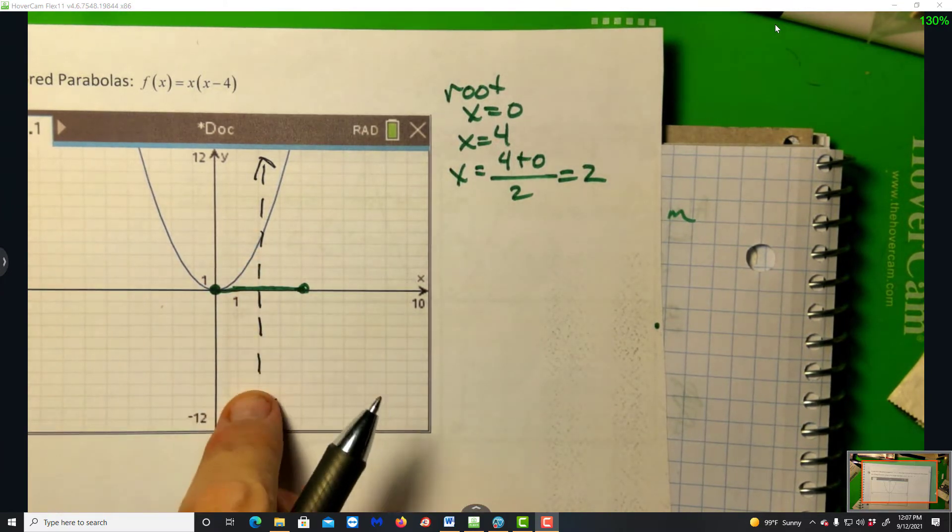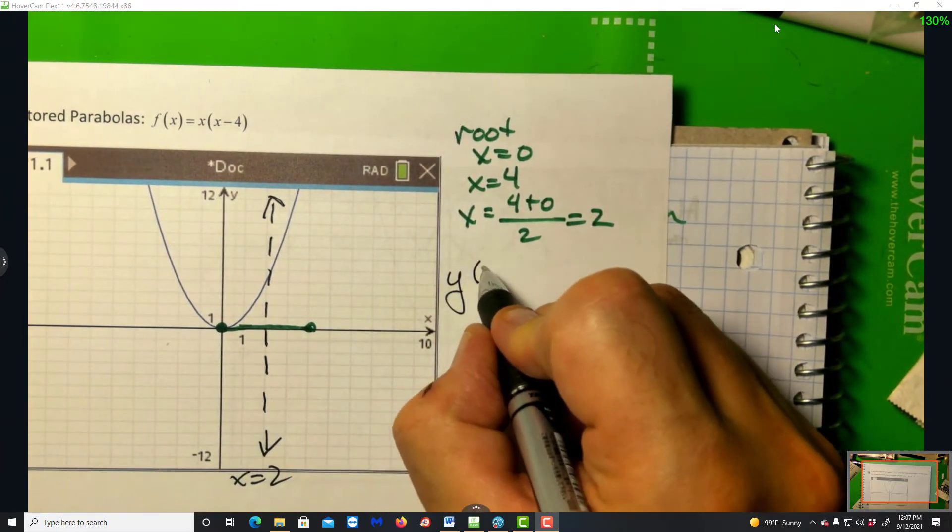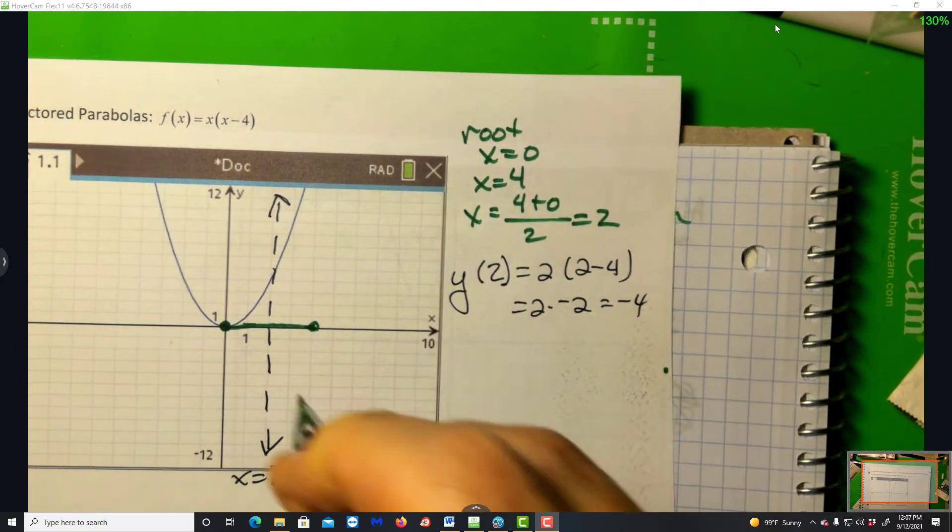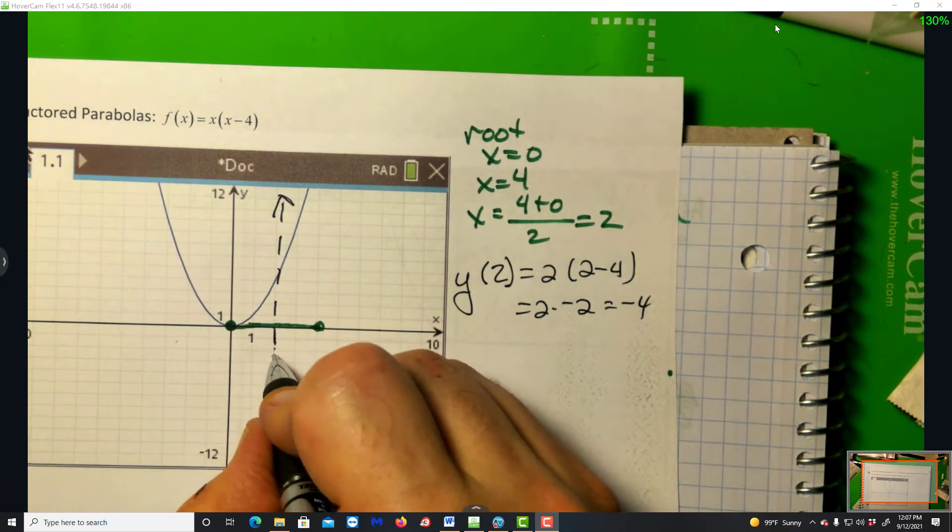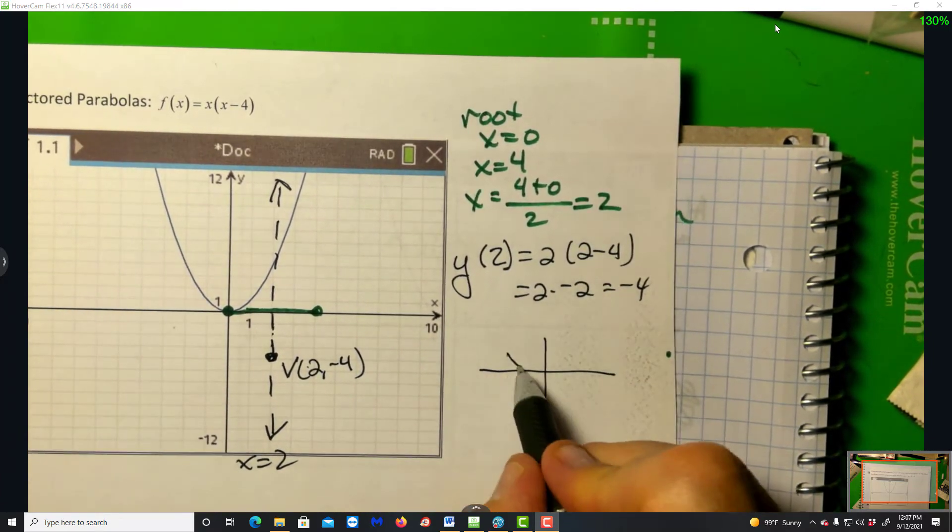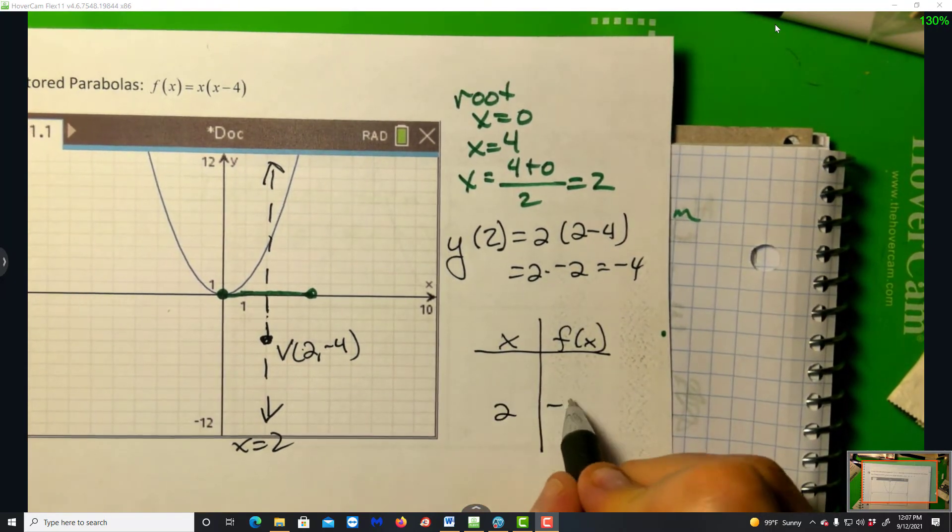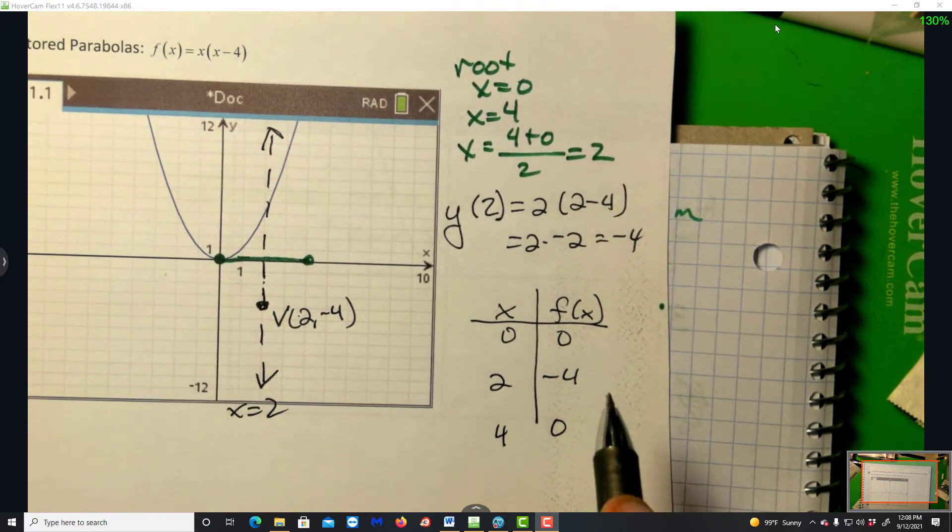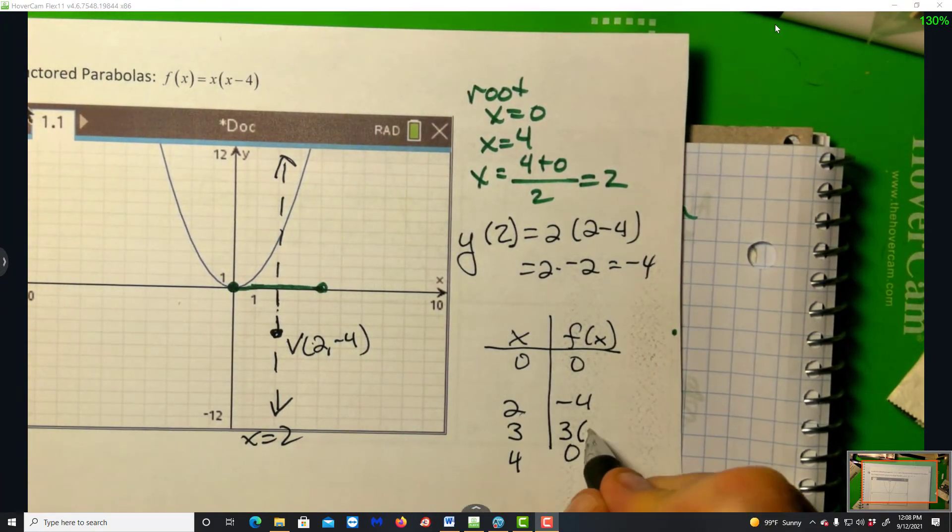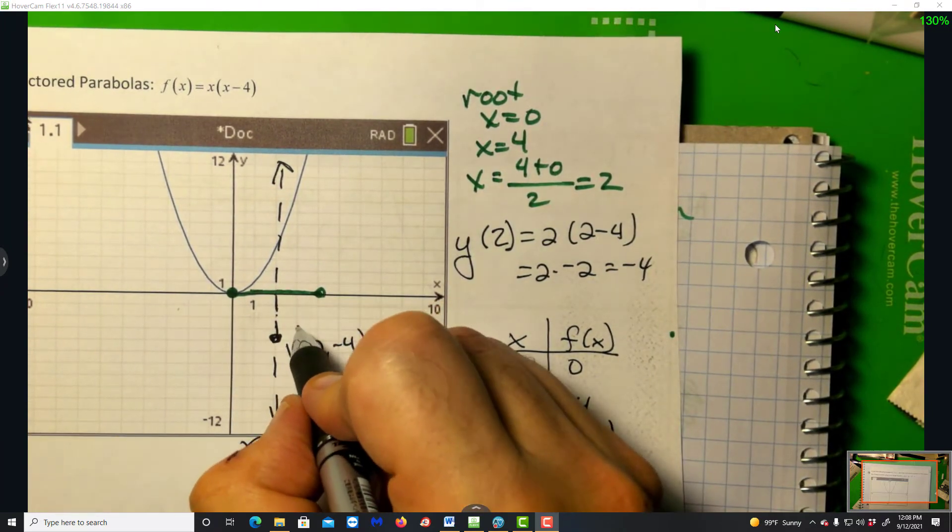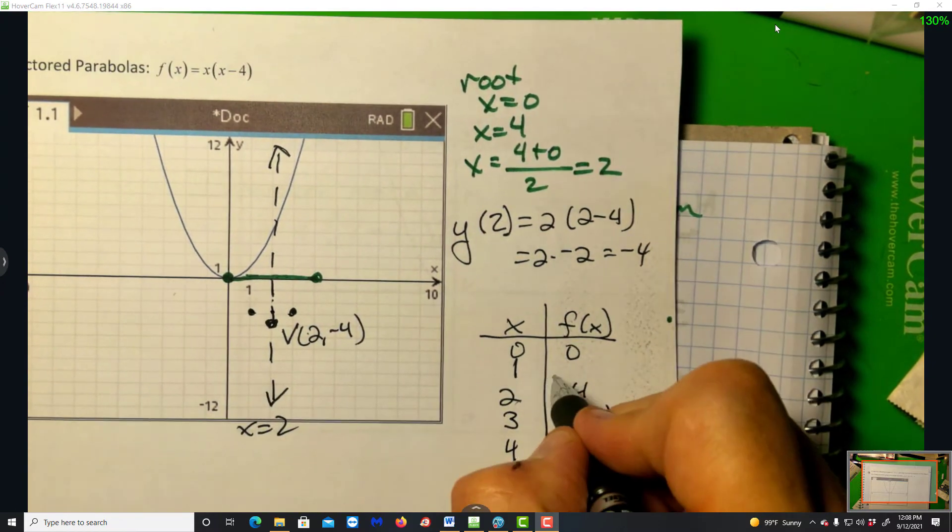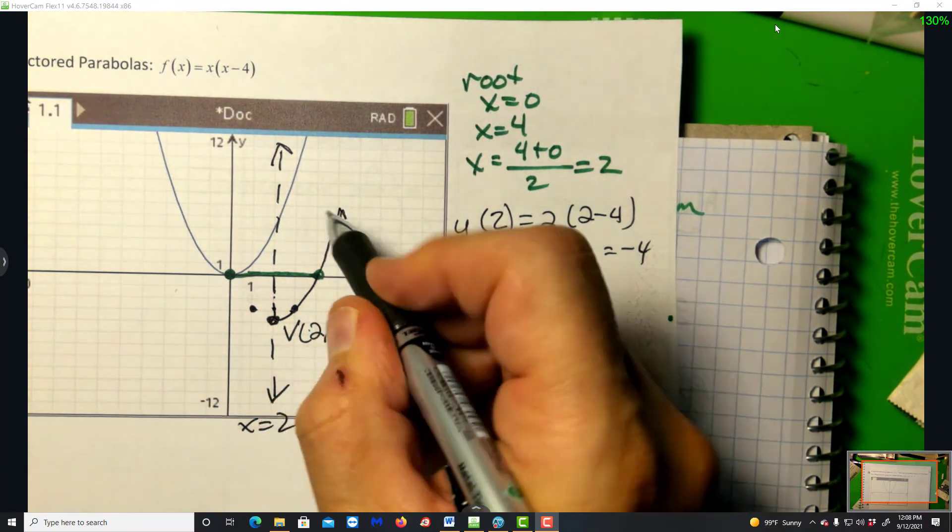Now the vertex always lives on the axis of symmetry. So to get the vertex, we evaluate the function at 2. So 2 times 2 minus 4. 2 times negative 2, negative 4. So the vertex is at 2, negative 4. Now watch this. 2, negative 4, 0, 0. Let's put 3 in there. 3 times, well, 3 minus 4 is minus 1, so that's at negative 3. Now I'm not even going to compute this. If I go back to the axis of symmetry and 1 to the left, there's an image. And now I can sketch my parabola.